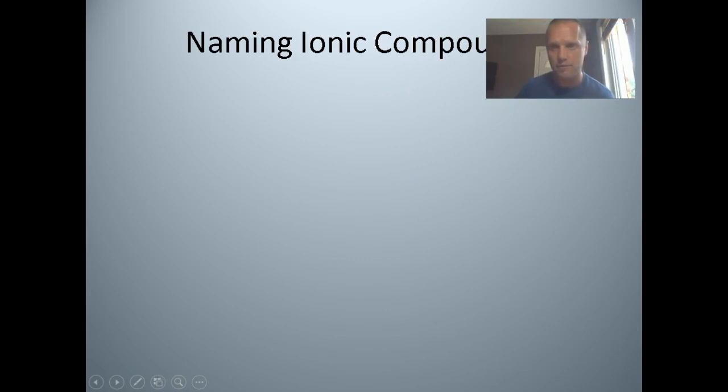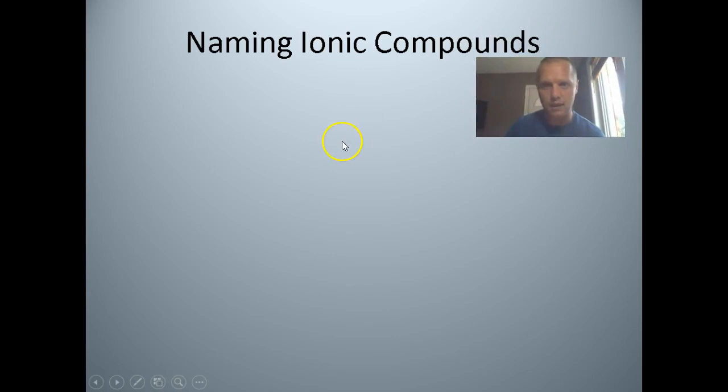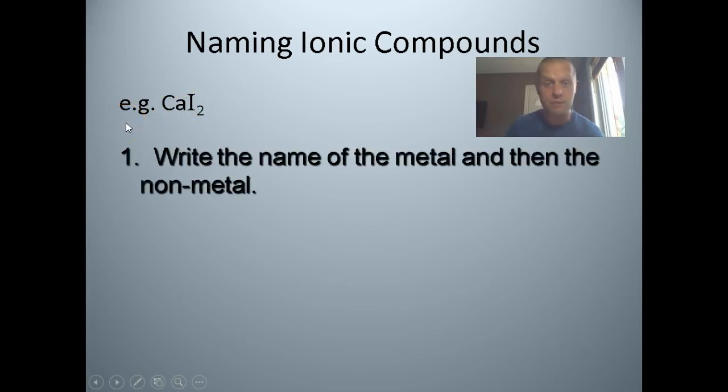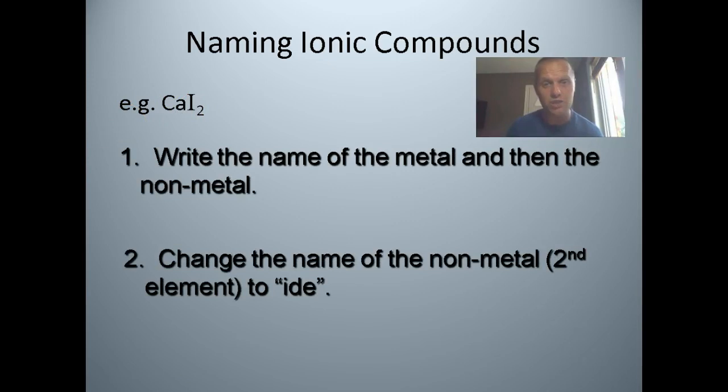If we want to name compounds, that means we're going to just do the opposite. So we don't look at the subscripts, which are one and two. We just name the elements that we see. We don't care that there's two iodides here. We just write the name of the metal and then the nonmetal. And we always change the naming of the nonmetal to IDE, so it would be chloride, fluoride. In this case, it's going to be iodide. So the name of this is going to be calcium, and then I see that I have iodine there, but I'm going to drop the NE and I'm going to put DE here. And it's going to be called calcium iodide.